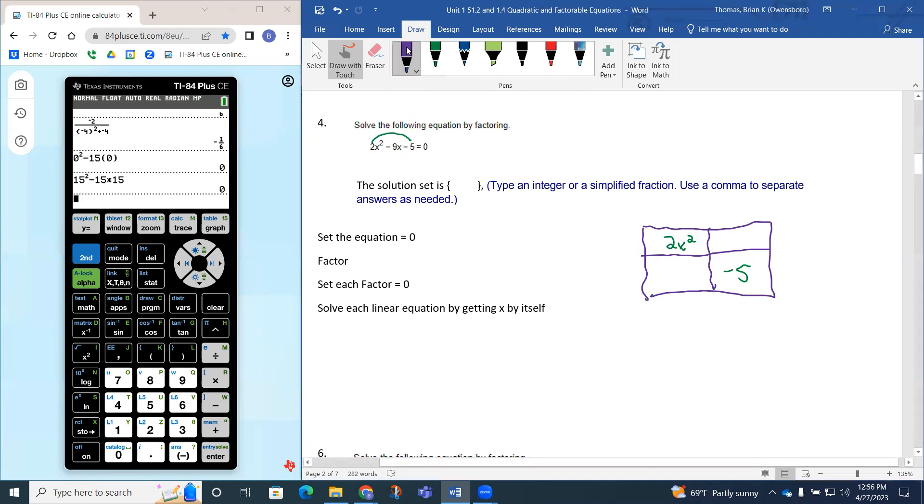We need the factors of negative 10 that give me this negative 9, the linear coefficient. The factors of 10 would be 1 and 10, and 2 and 5.